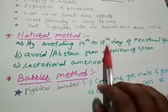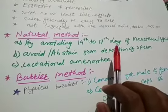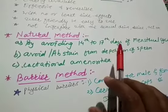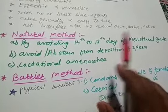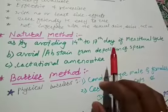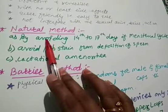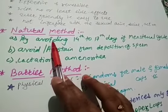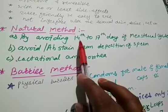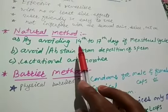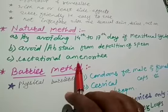The period from the 10th to 17th day is called the fertile period, and the remaining period is called the safe period. This method — periodic abstinence — is included under the natural method. The remaining two subtypes of the natural method will be covered in the next video.